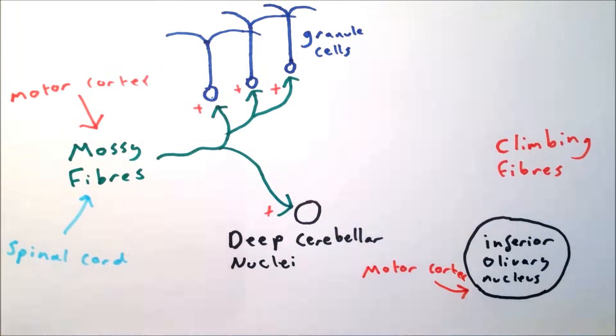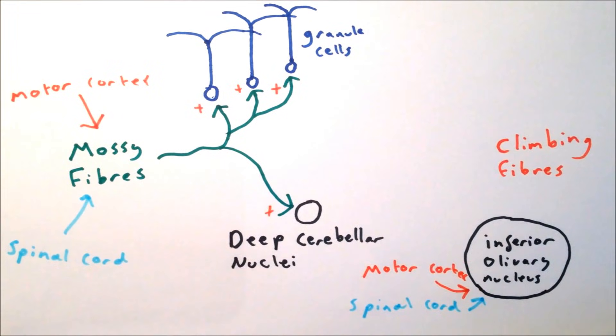The other inputs are climbing fibers, which arise from the inferior olivary nucleus. This is an area of the medulla oblongata, which receives input from a variety of areas, including the ascending tracts in the spinal cord and areas of the cortex.